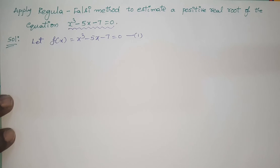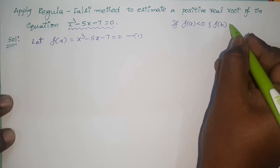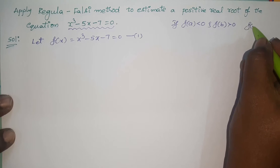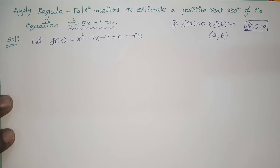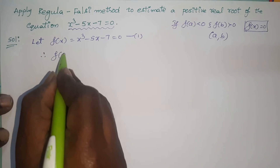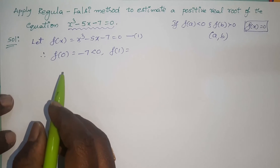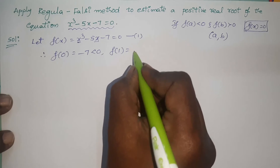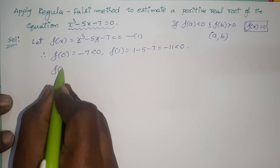First of all we should find out the initial approximations of the required root. According to the Intermediate Value Theorem, if the function value at point a is negative and the function value at point b is positive, then one root of f(x) = 0 lies between a and b. So we investigate function values at various points: f(0) = -7, which is negative. f(1) = 1 - 5 - 7 = 1 - 12 = -11, also negative.